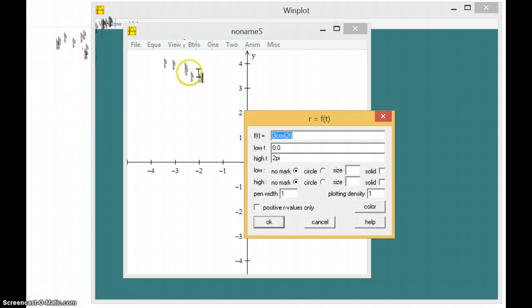And type in the polar graph. This one is 3 cosine 2t, going from 0 to 2 pi.